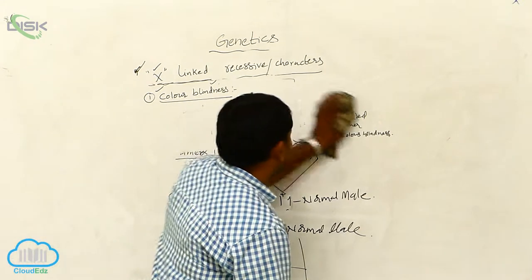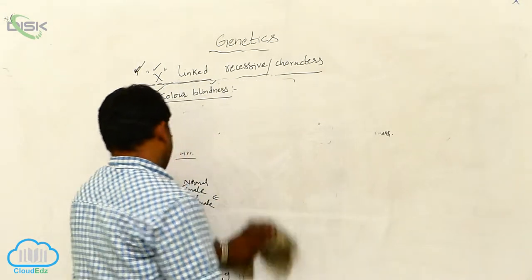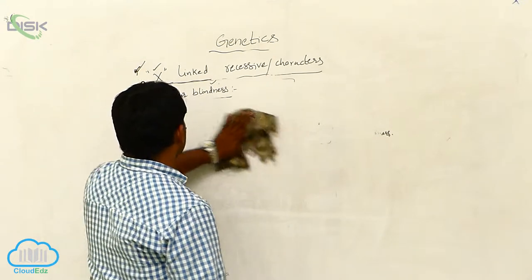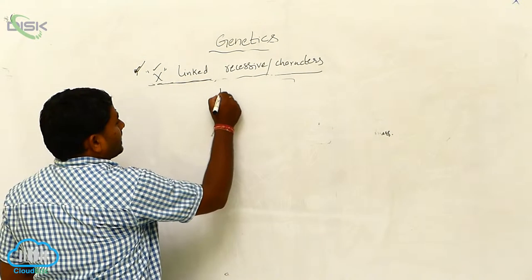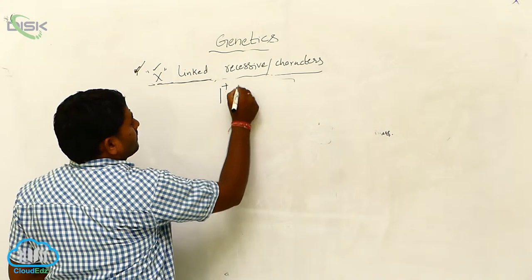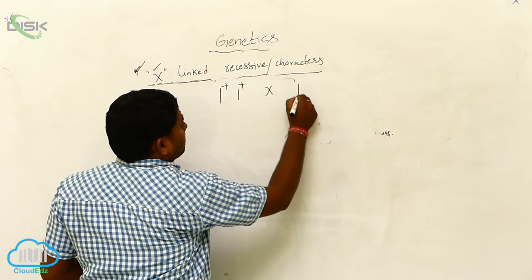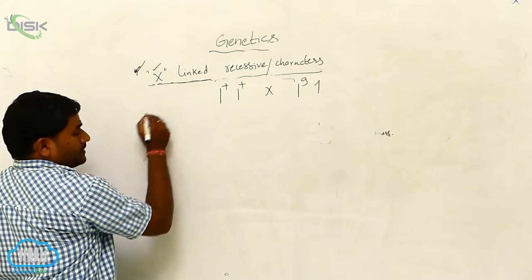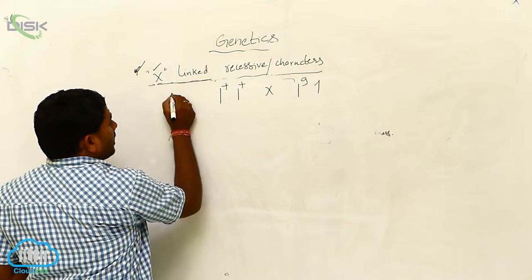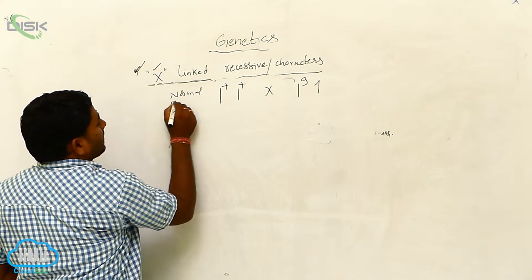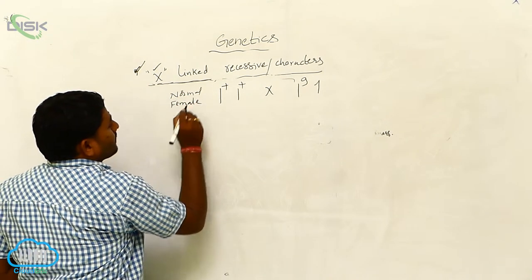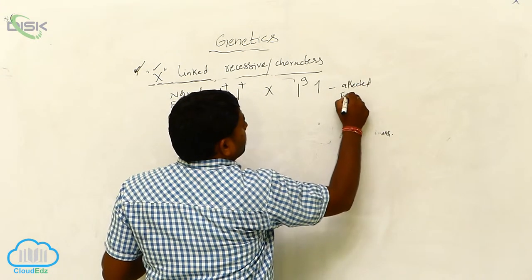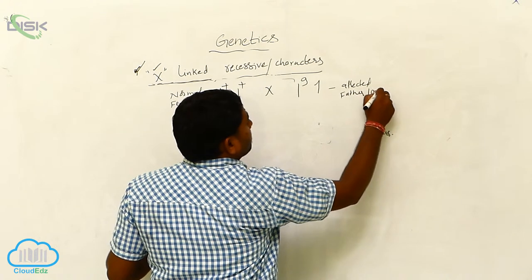So let us see once again. If you take color blindness: this is normal mother, or normal female, and this is affected father or male. How does gametogenesis take place? The fertilization takes place.